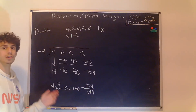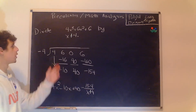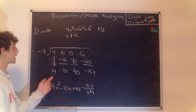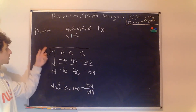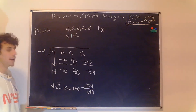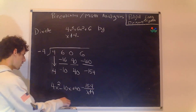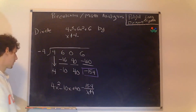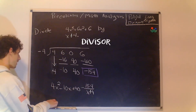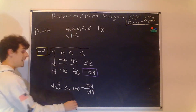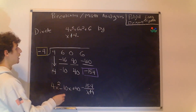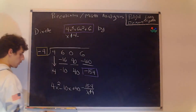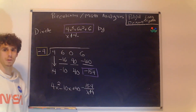Synthetic division is commonly used to find zeros of large-scale polynomials because we can easily plug in the candidate zero — in this case negative 4. If the remainder comes out to be 0, then that value is indeed a zero of the polynomial.